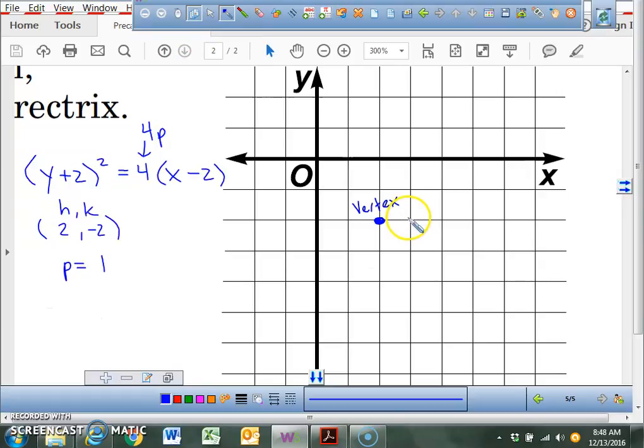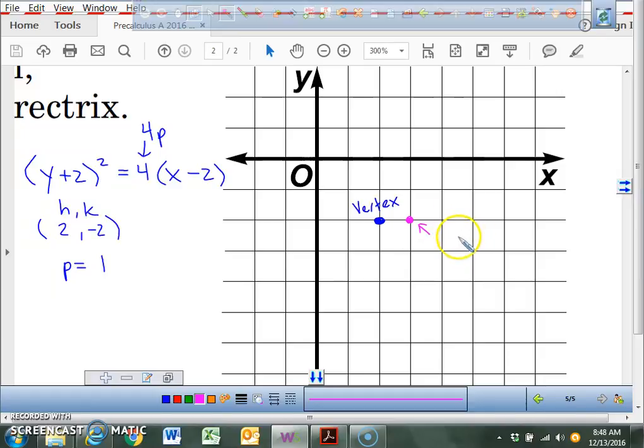Which means, if I go one unit over, and I put a point right here, what does this point to the right of the vertex, what does this point represent in the parabola? That's the ordered pair for the focus. That's the ordered pair for the focus. So I want you guys to write down in your journal, the ordered pair for the focus is simply 3, negative 2. That's the ordered pair for the focus.